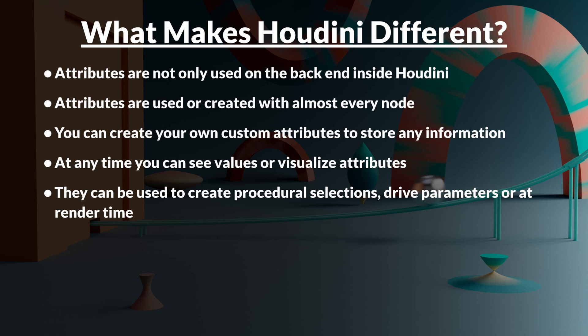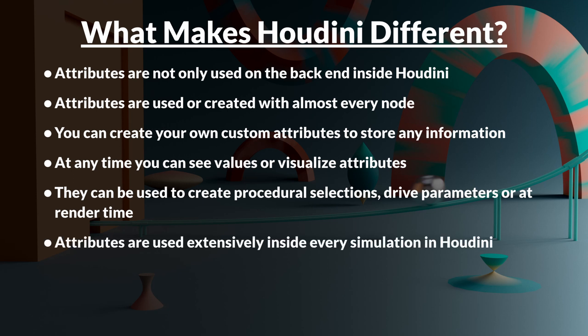The reason I say you shouldn't start with simulations or procedural generators is because attributes are used extensively inside of simulations especially, and if you don't have a good grasp on attributes, you're really going to struggle. That's why I feel a lot of people fail to start with Houdini — they go straight to simulations because that's what Houdini is known for, even though it can do so much more. Jumping right into simulations almost never really works out.